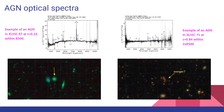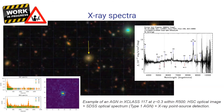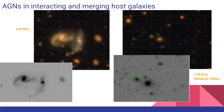Some more AGN host images from HSC with interesting morphology, all extracted with i-band photometry, including a spiral case and two cases with tidal tails. Here are more examples with HSC images with corresponding SDSS optical spectra — both are narrow-line cases. The first is at low redshift and the second is at high redshift and is probably a merger. These are two examples of interacting and merging host galaxies that we were very interested in finding.